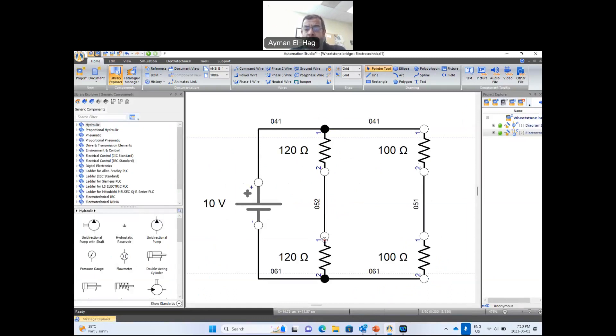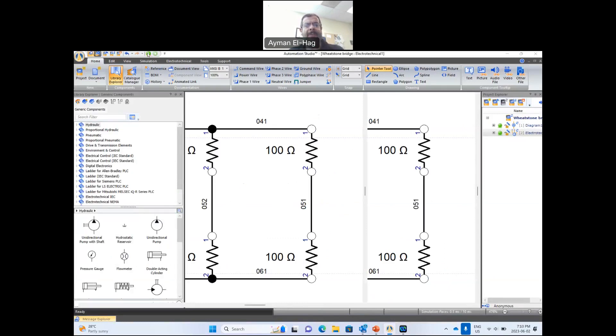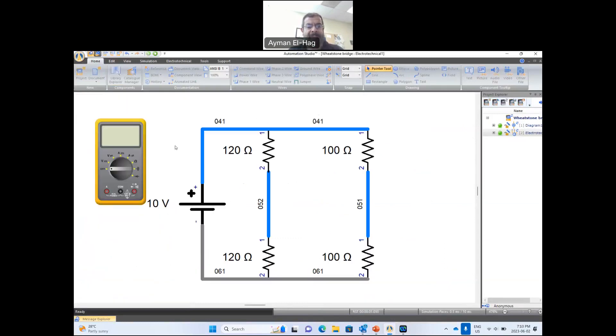And the ratio in the first leg is one. The second leg is also one. 120 over 120 is one. 100 over 100 is equal to one. So let me run the simulation now. So that is the balance condition. We expect to see that the output voltage will equal zero. So it is between this point and that point, and it's equal to zero. So that is the balance condition.